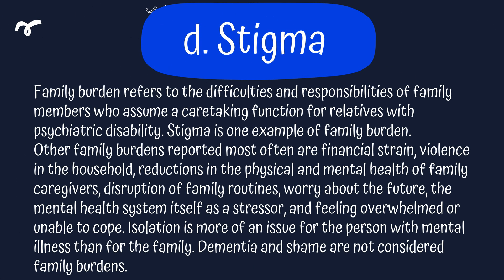The answer is D, stigma. Family burden refers to the difficulties and responsibilities of family members who assume a caretaking function for relatives with a psychiatric disability. Stigma is one example of a family burden. Other family burdens reported most often are financial strain, violence in the household, reductions in the physical and mental health of the family caregivers, disruption of family routines, worry about the future, the mental health system itself as a stressor, and feeling overwhelmed or unable to cope. Isolation is more of an issue with the person with mental illness than the family. Dementia and shame are not considered a family burden.